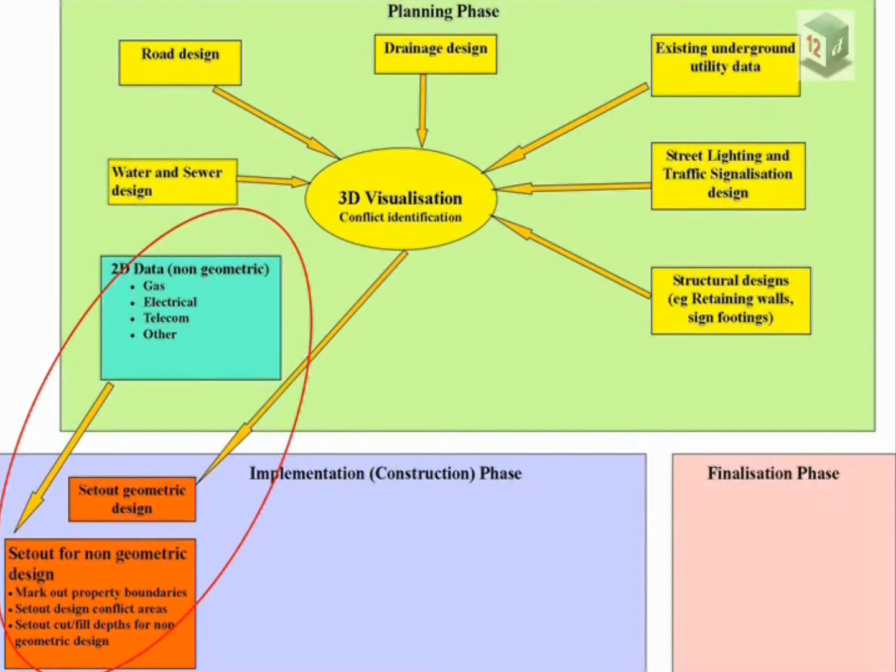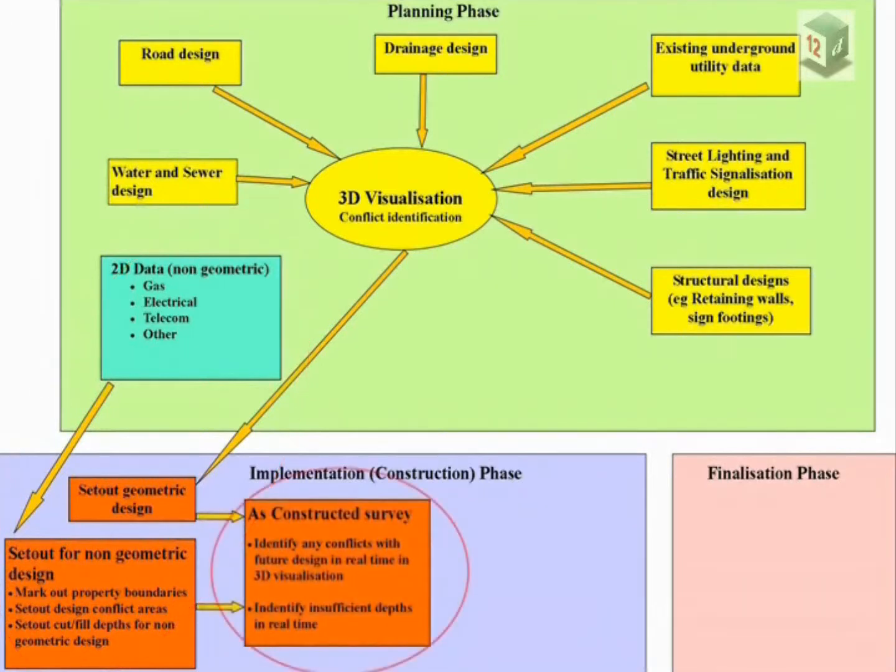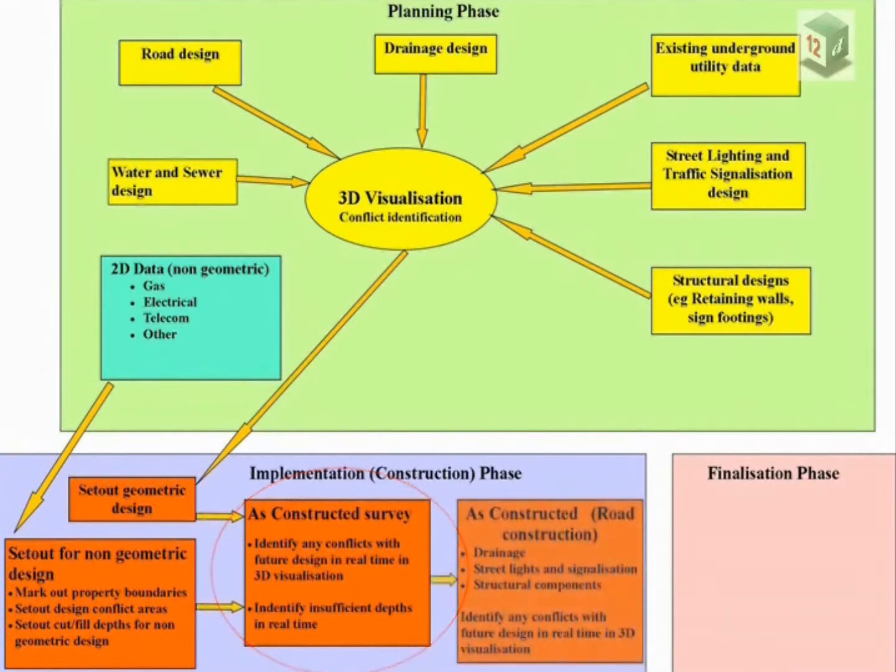In the construction phase for the non-geometrical design, property boundaries are marked out for horizontal reference and cut fill depths are also marked out. Any geometric design is accurately set out for construction crews. As construction takes place, accurate as constructed survey is carried out prior to backfill. During road construction, as constructed survey captures all the drainage, street light and traffic signalization footings, service pits and conduits.